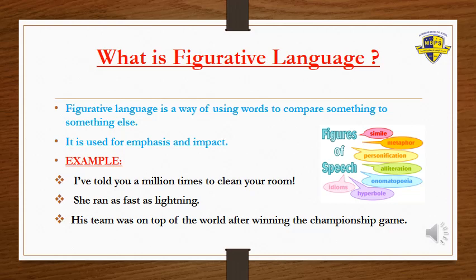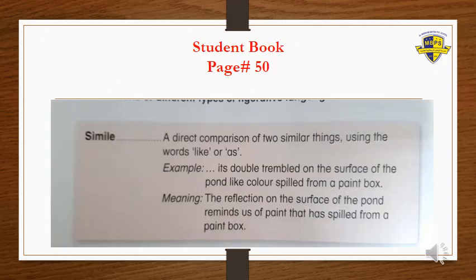That last example means the team was so happy after winning the championship game that they were feeling as if they were on top of the world. There are many types of figurative language — for example, similes, metaphors, personification, alliteration, and idioms. But today we will focus on only two: similes and metaphors.